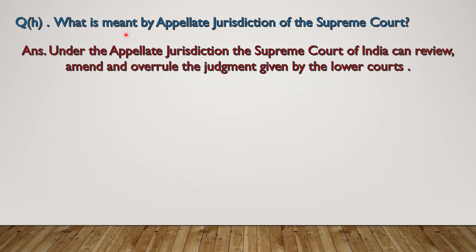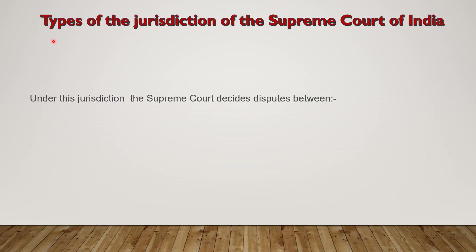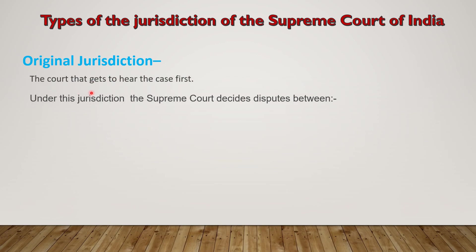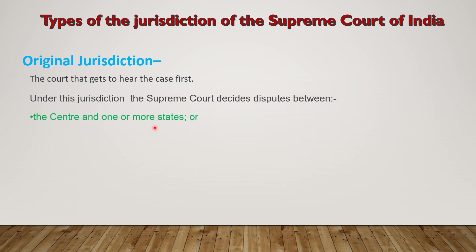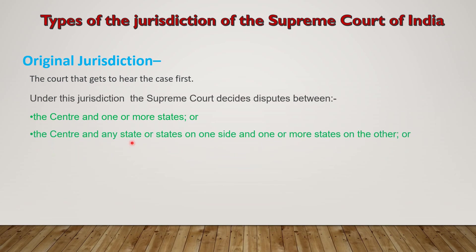Now the question is: what is meant by appellate jurisdiction of the Supreme Court? The answer is, under appellate jurisdiction, the Supreme Court of India can review, amend, and overrule the judgment given by the lower courts. We also need to know about the types of jurisdiction of the Supreme Court of India. Under original jurisdiction — the court that gets to hear the case first — the Supreme Court decides disputes between the centre and one or more states, or the centre and any state or states on one side and one or more states on the other, or between two or more states.